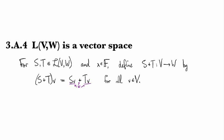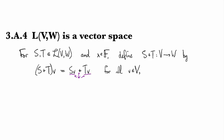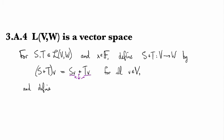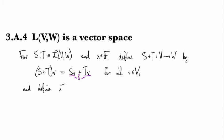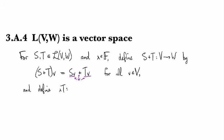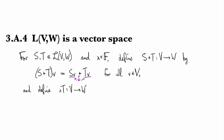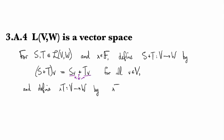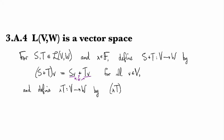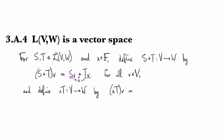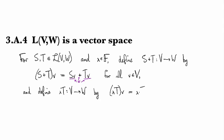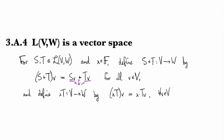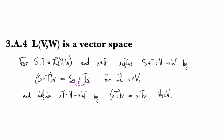That gives us addition. For scalar multiplication, this will also be a map from V to W. We say what the scalar multiple of T does to a particular element v: it's just lambda times T of v.